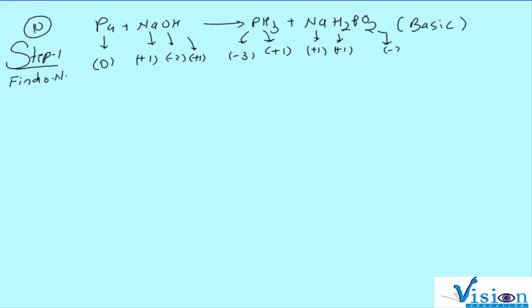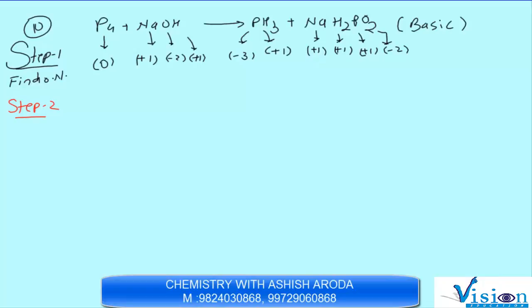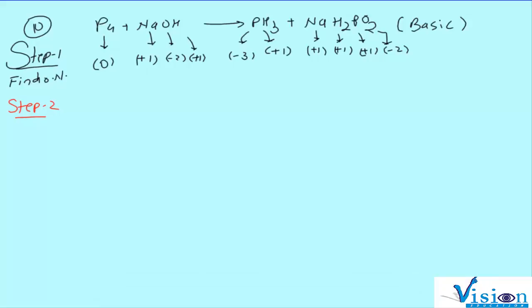देख रहे हैं — sodium का oxidation number change नहीं हो रहा है। Apart from oxygen and hydrogen, it is a spectator ion. So what do we need to do? We have to remove spectator ions. जैसे cricket match में खेलता कोई और है और spectator बैठे-बैठे मज़ा लेते — sodium का कोई oxidation/reduction नहीं हो रहा, तो उसे पहले बाहर निकालते हैं।